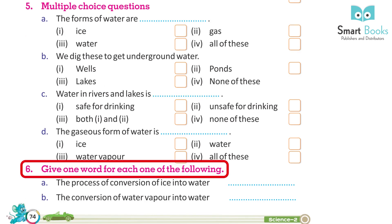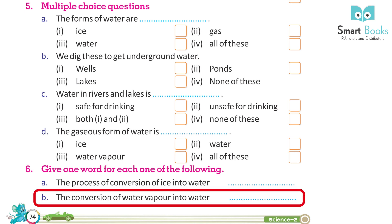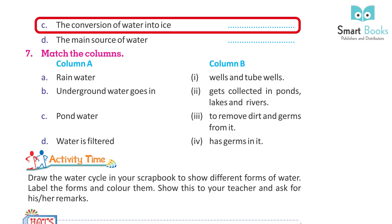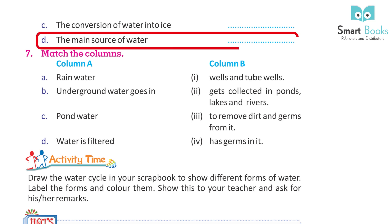Give one word for each of the following: A. The process of conversion of ice into water. B. The conversion of water vapor into water. C. The conversion of water into ice. D. The main source of water.